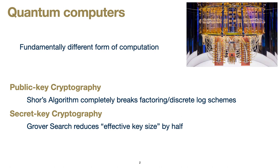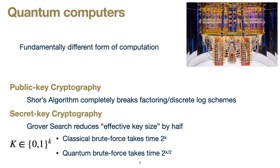Grover's search is a second important algorithm which will effectively reduce the key size of various secret key cryptographic algorithms by half. The point here is that if we have a key of length k, a classical brute force attack will take time 2^k, while in the quantum setting we can do this attack in time 2^(k/2), meaning that something which provided 128 bits of security may now only provide 64 bits of security, which might be insufficient.